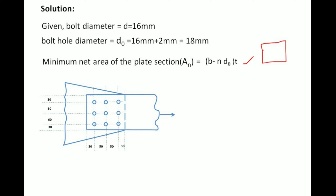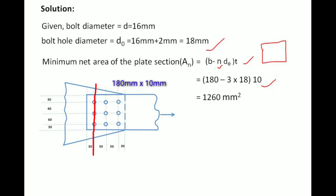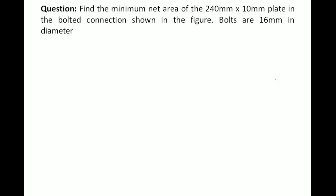To calculate the minimum net area for the simple connection: b = 180 mm as given, n = 3 bolts, diameter of hole dh = 18 mm, and thickness t = 10 mm. This gives us the minimum net area as 1260 mm².